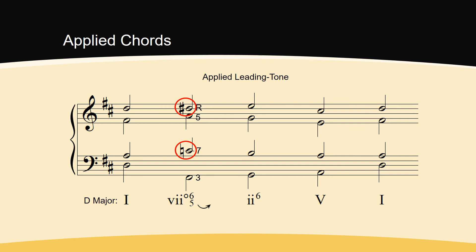When part writing applied chords, you follow the rules for writing a dominant tonic progression. Resolve all chordal 7ths down by step, and treat any temporary leading tone like a regular leading tone. If it's in an outer voice, it must resolve to the temporary tonic. If it's in an inner voice, it can resolve up to the temporary tonic, or down to the fifth of the chord it progresses to.